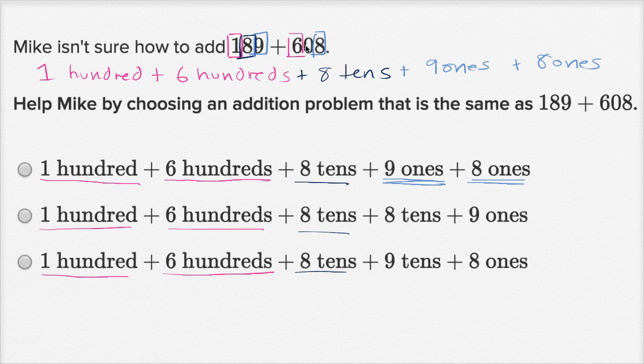Now you might be saying, okay, we took into account all of these digits except for this zero over here. How come there's a zero here in the tens place? Well, that would just be zero tens, which is just zero. So it's not going to change the value of this. So this first choice is indeed the same as the original addition problem.